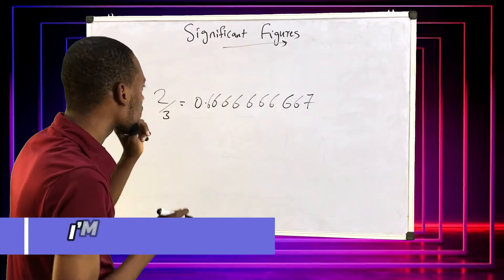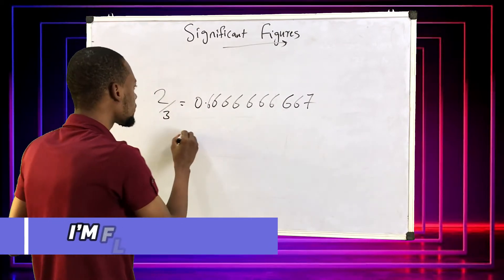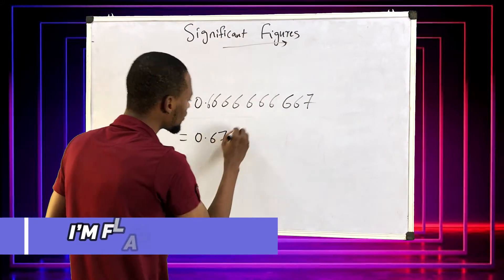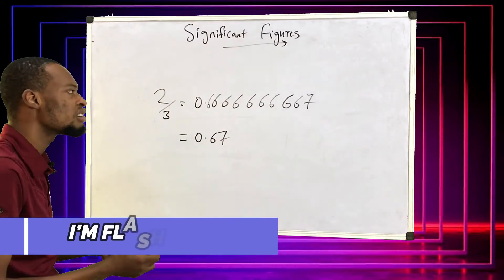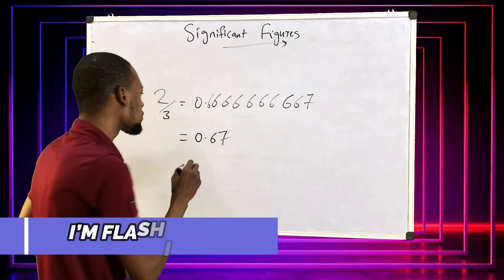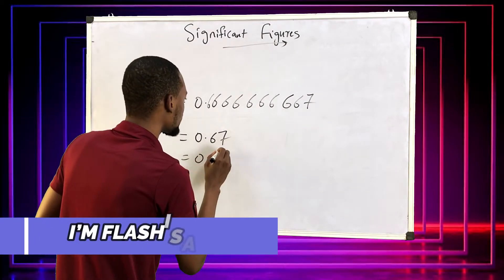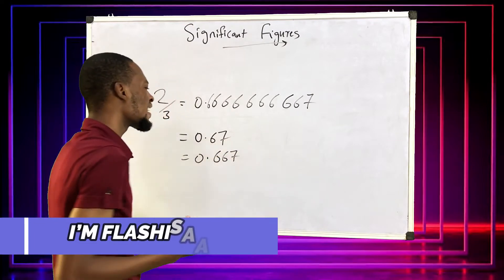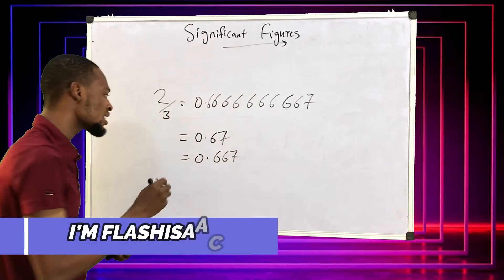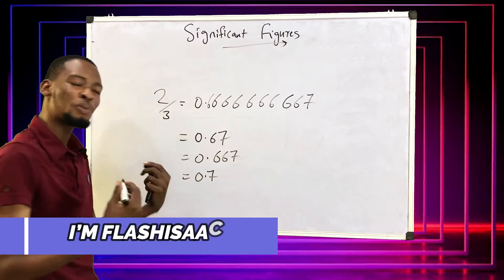Therefore, we introduce significant figures. Significant figures are ways we deal with values or digits, to bring them down to what we actually desire. For example, I can bring down these numbers to simply 0.67 and it will be correct. I can also bring it down to 0.7 and it will be correct.